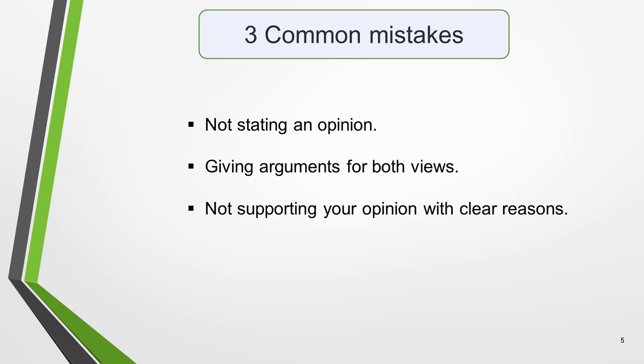Next I want to quickly give you three common mistakes that students often make. One: not stating an opinion. Two: giving arguments for both views. And three: not supporting your opinion with clear reasons. The most common error is not giving an opinion. The question will clearly state that you must choose one side of the argument. If you fail to do this you'll get a low score for task achievement. It doesn't matter which side of the argument you take or even that you agree with it — choose the one you can develop the best argument for. And make sure that you don't change your mind part way through the essay, and don't give reasons for the opposing view.